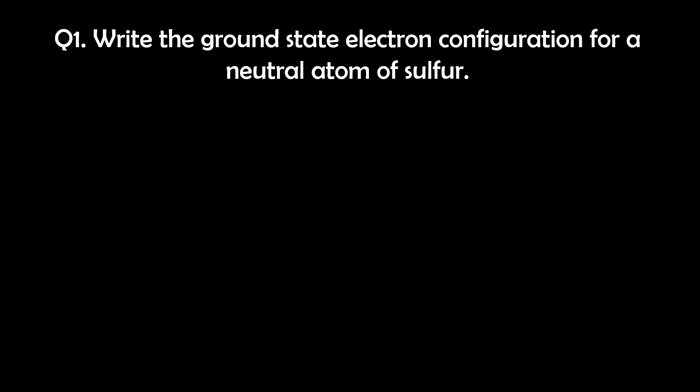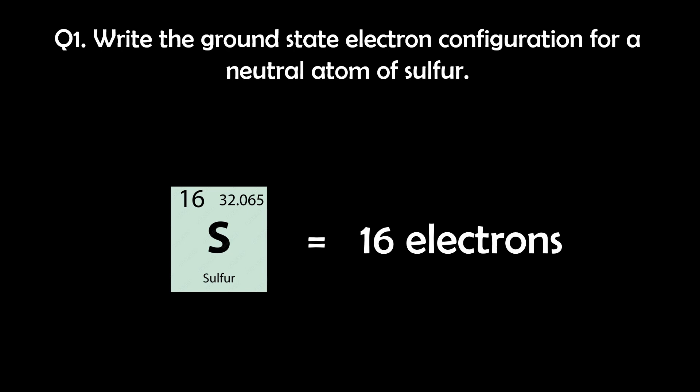Question 1. Write the ground state electron configuration for a neutral atom of sulfur. To determine the ground state electron configuration of sulfur, which has an atomic number of 16, we first note that it contains 16 electrons.